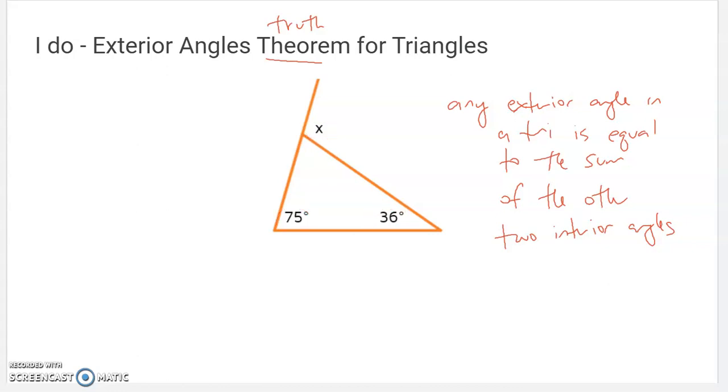So basically means this exterior angle is equal to this plus this. Or if I drew more exterior angles on this triangle, like let's say I extended this side and asked you to find Y. Y would be equal to whatever this plus this are. The reason is it all ends up being 180s, right? This plus this plus this equals 180. And this plus this equals 180. Supplementary angles are 180s. And triangles are 180s. So you end up with this theorem that lets you kind of shortcut to the answer.